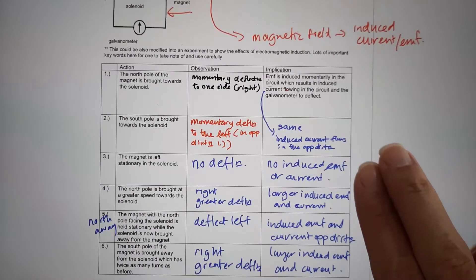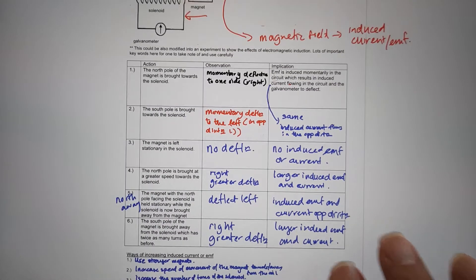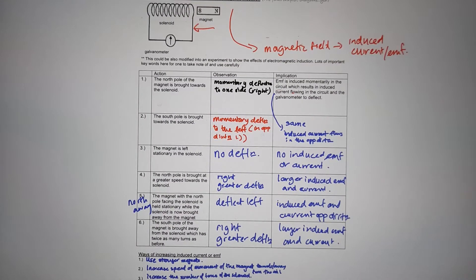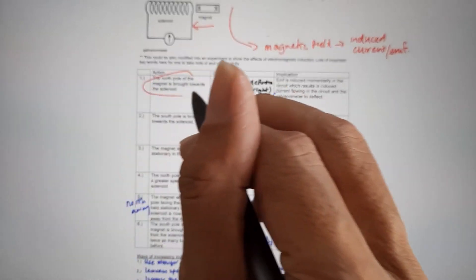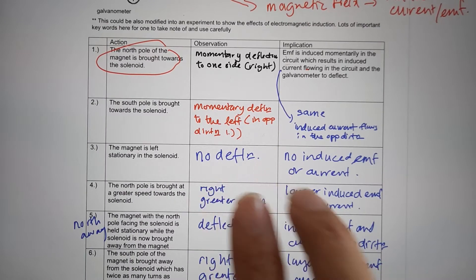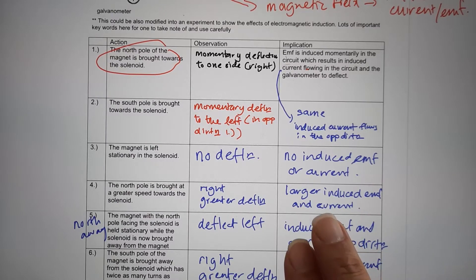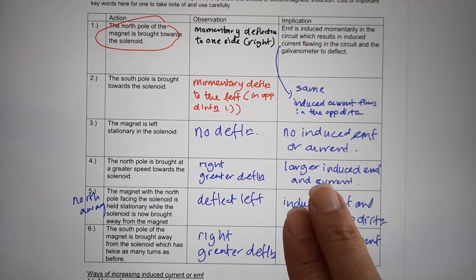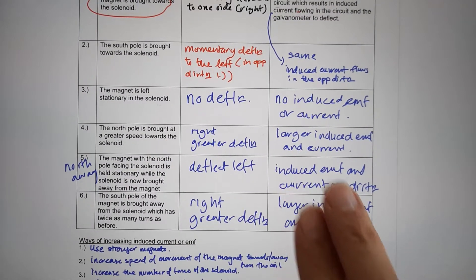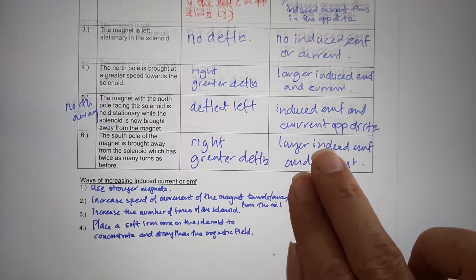In your first page, this is quite obvious and follows a certain logic. If you were to move the North Pole towards the solenoid, there is a momentary deflection to the right. If you move the North Pole away, there will be a deflection to the left momentarily. That also means that the induced current is flowing in the opposite direction.